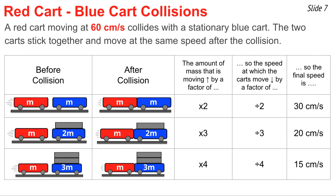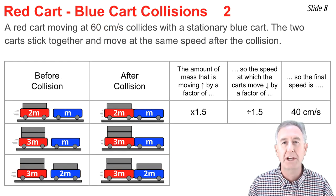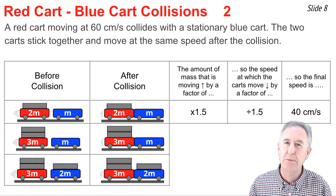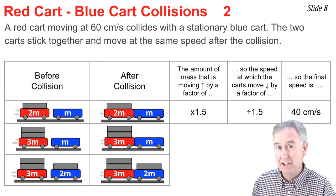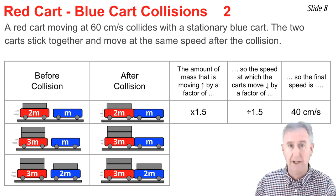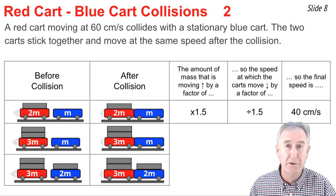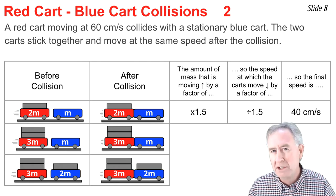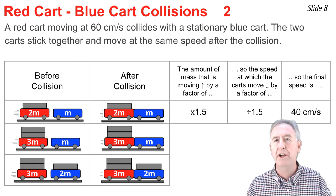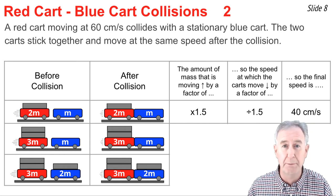And here are your answers. Here's a similar situation with a red cart moving at 60 cm/s before a collision with a stationary blue cart. Together they stick and move with one speed after the collision, and we have to fill in the table indicating the final speed. What makes this more difficult is that the multiplying and dividing factors in these columns are not going to be whole numbers.